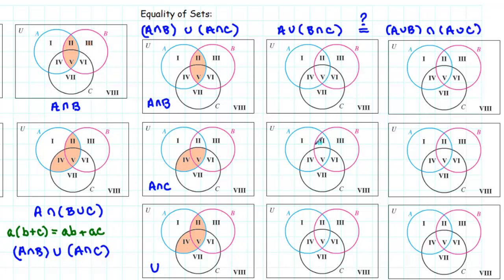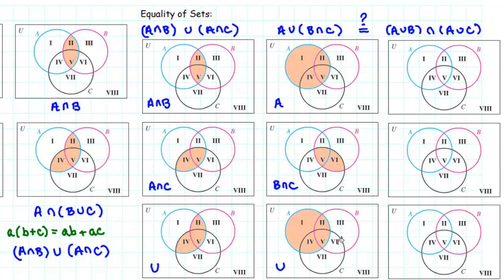To answer this, let's first create a Venn diagram for A union (B intersect C), taking it one step at a time. First we'll find A — which includes all regions inside circle A: regions 1, 2, 4, and 5. Then B intersect C is where circles B and C overlap, which is regions 5 and 6. In order to form the union, we shade in all those regions: 1, 2, 4, 5, and 6.